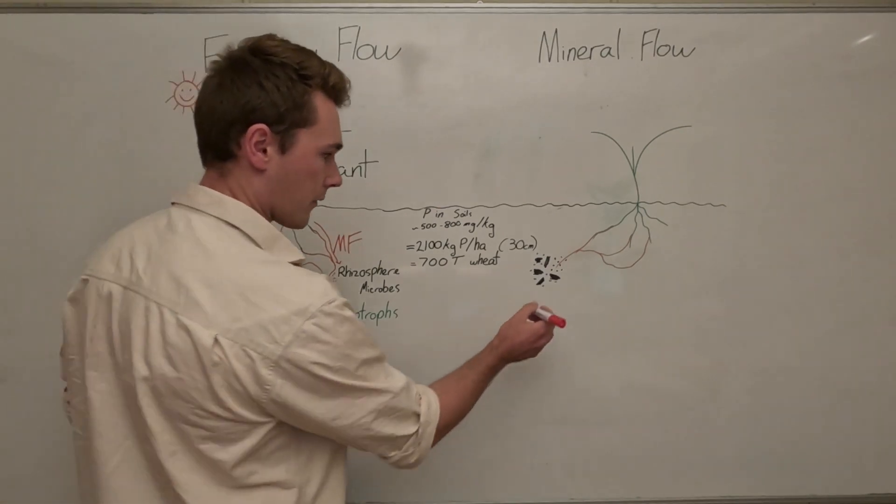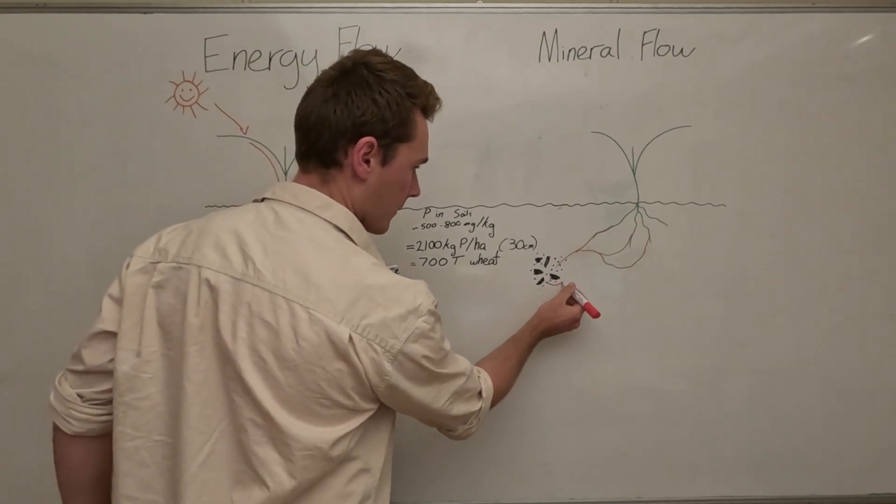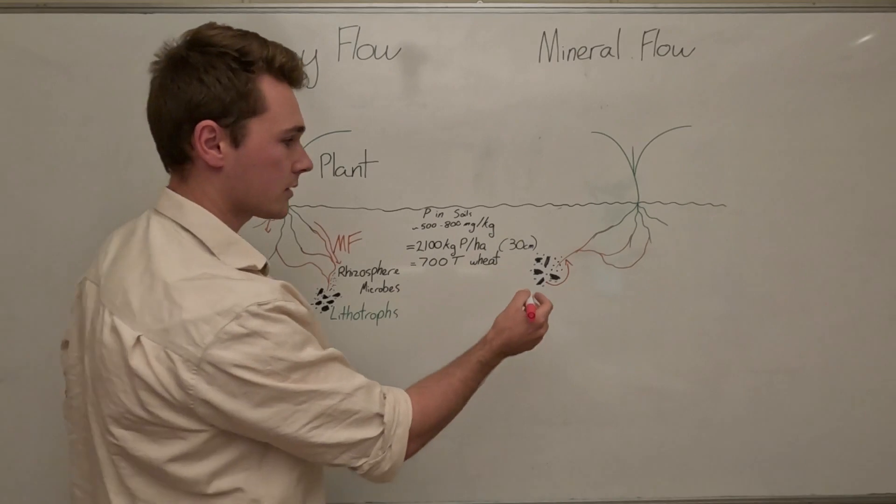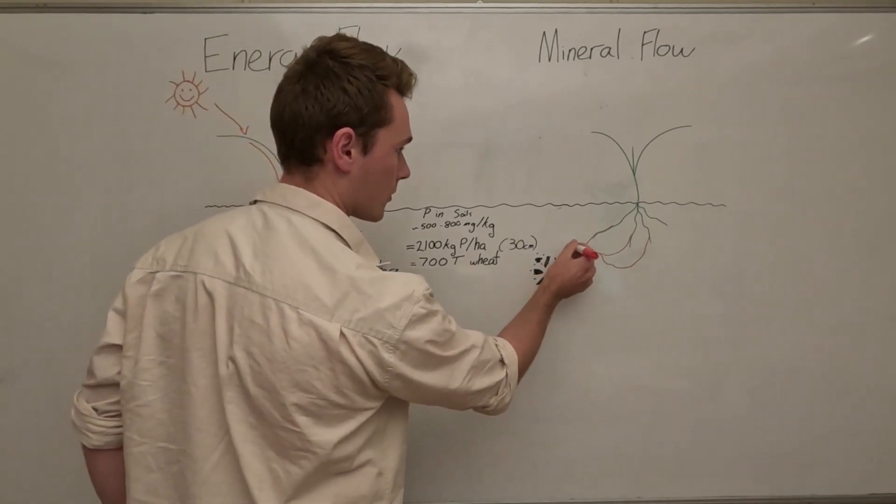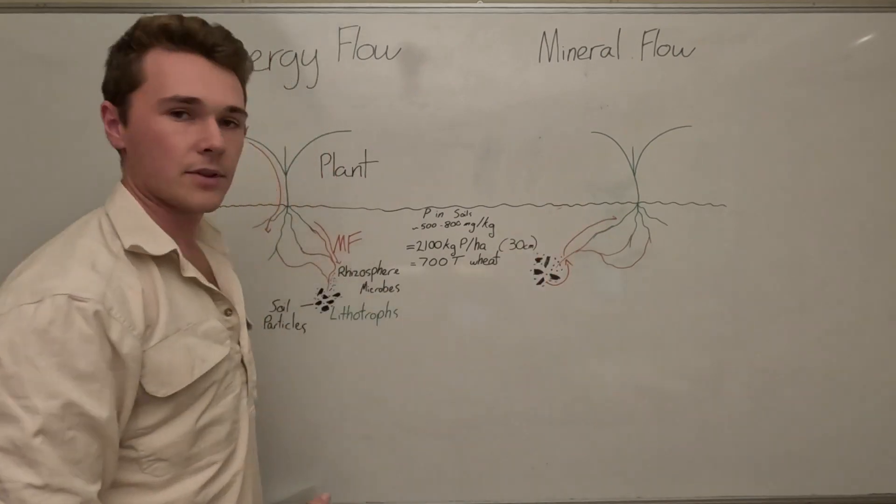We have the phosphorus that our lithotropes mine, they then give that to our mycorrhizal fungi in exchange for sugars. Mycorrhizal fungi then will give that back to our plant in exchange for sugars. Now our plant has phosphorus.